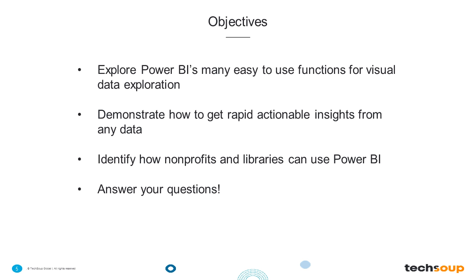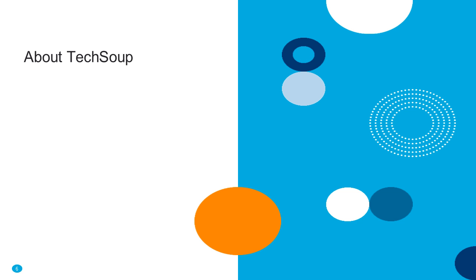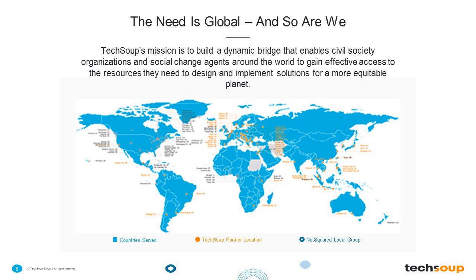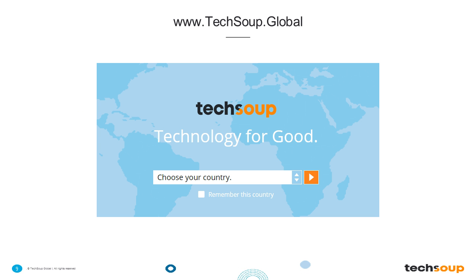TechSoup is headquartered here in San Francisco, California, and we want to know where you are — so go into the chat box and give us a shout out from your city, state, or country. We're a 501(c)(3) nonprofit like many of you joining us today. We work to empower organizations around the world to help them get the latest tools, skills, and resources to achieve their mission. We serve almost every country in the world and have 62 partner NGOs globally, with a dedicated website at www.techsoup.global for countries outside the US.